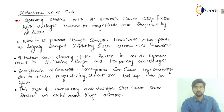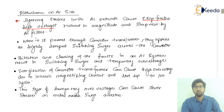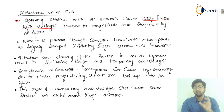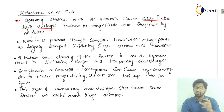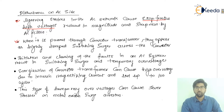In the AC network, lightning strokes may cause steep-fronted high voltages. The magnitude and steepness of these waves are reduced by the AC filters. Whenever lightning strokes occur, they appear as steep-fronted high voltage waves — an impulsive high voltage value for a short duration of time. The AC filters reduce both the magnitude and steepness of these steep-fronted high voltage waves.